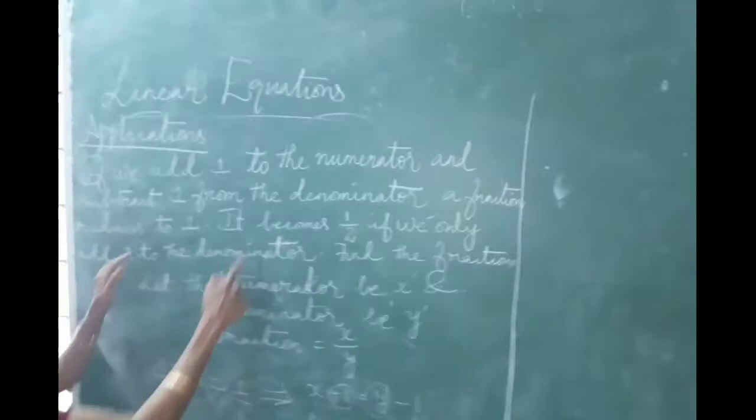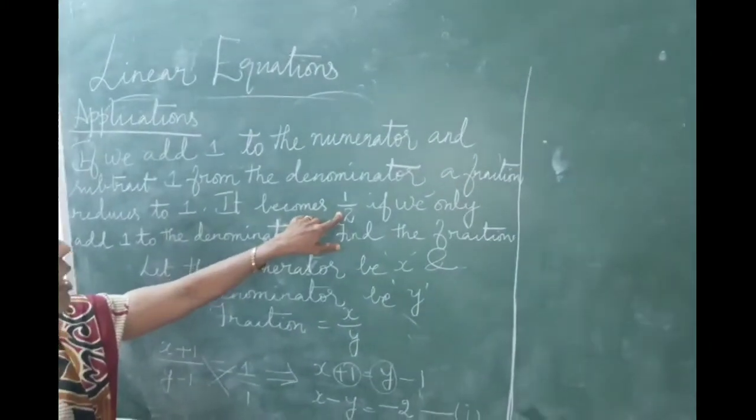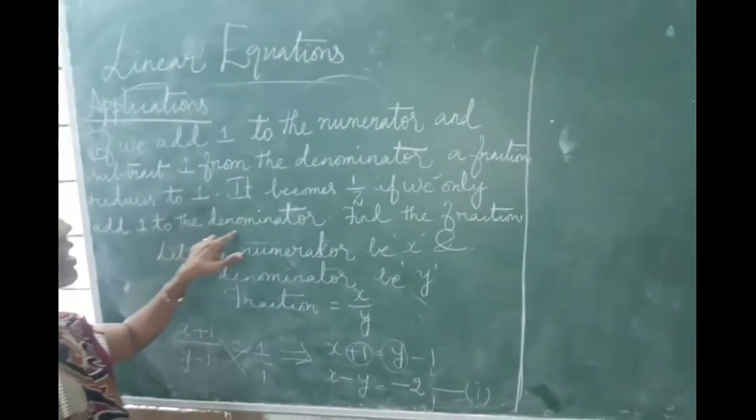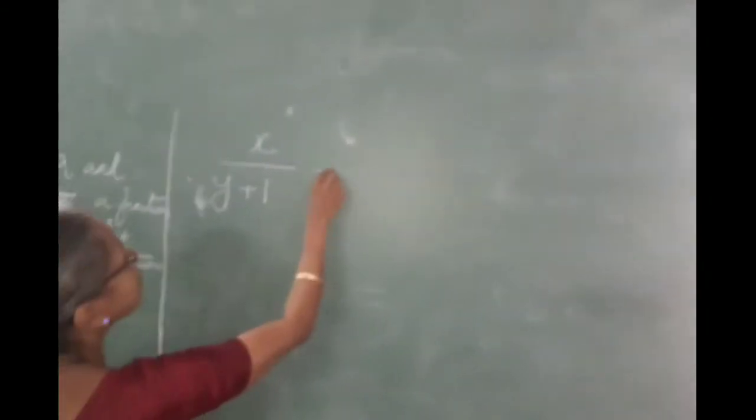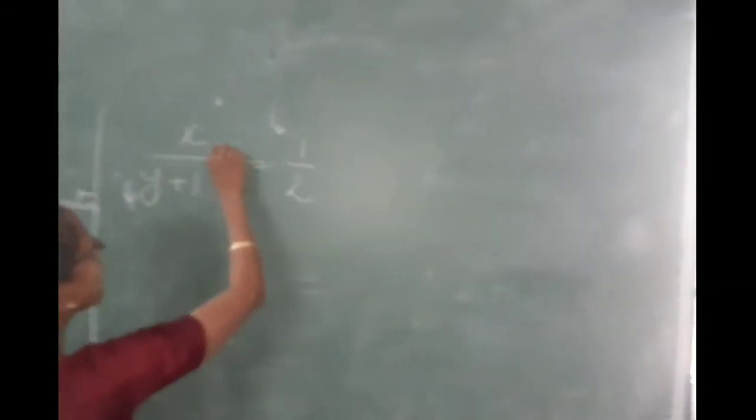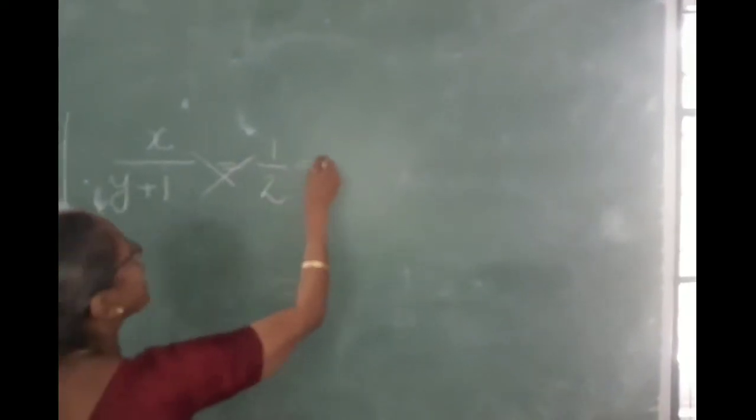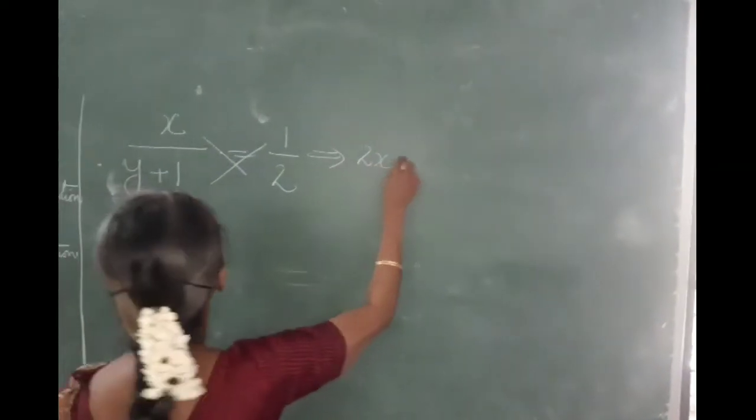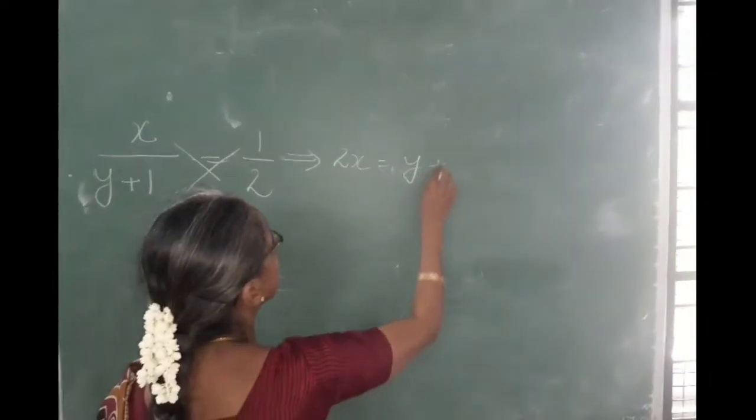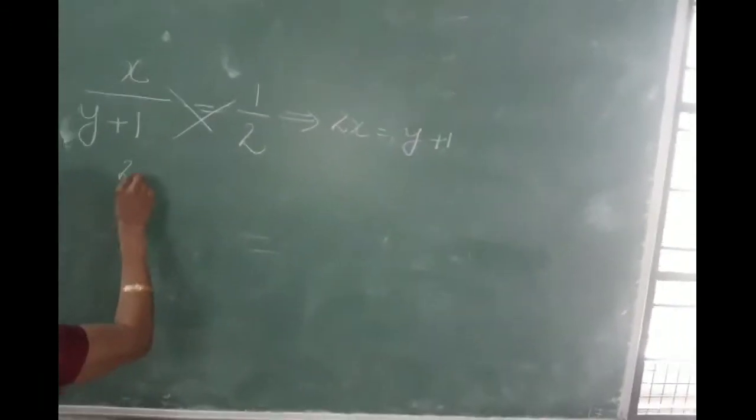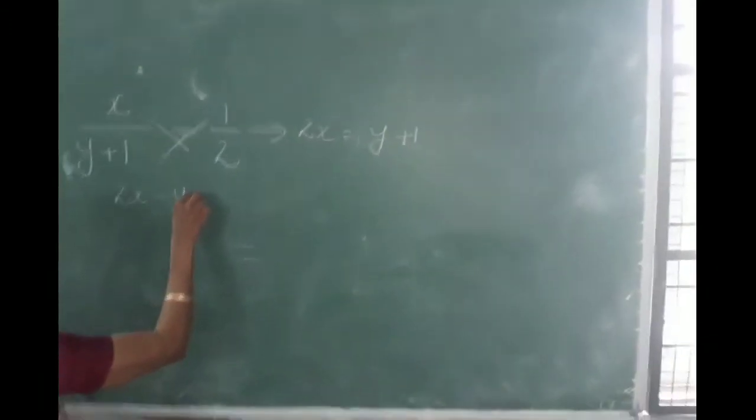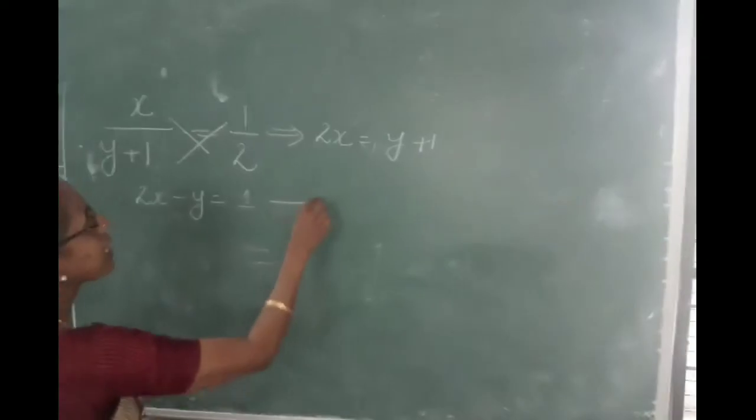Next, what is the second condition? It becomes half if we only add 1 to the denominator. There is no change in the numerator if we add 1 to the denominator. So x over y plus 1 becomes half, 1 by 2. Now again you cross multiply. 2x will be equal to y plus 1, or 2x minus y equal to 1. This is your second equation.